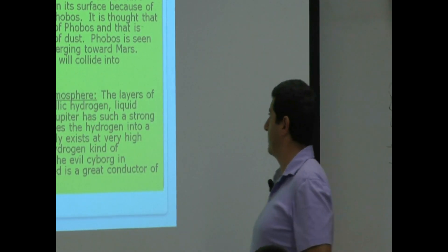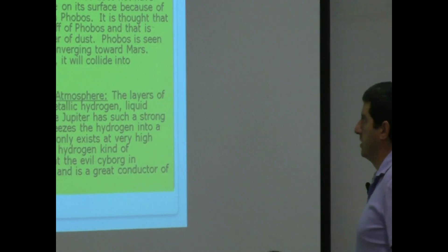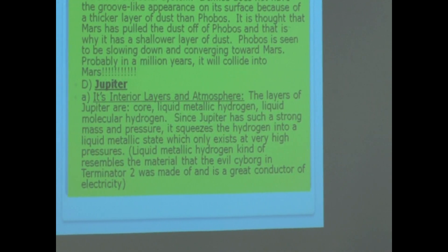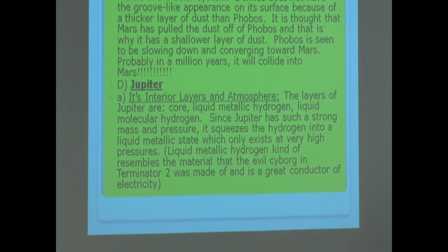Jupiter, its interior and atmosphere. The layers of Jupiter are core, liquid metallic hydrogen, and liquid molecular hydrogen.